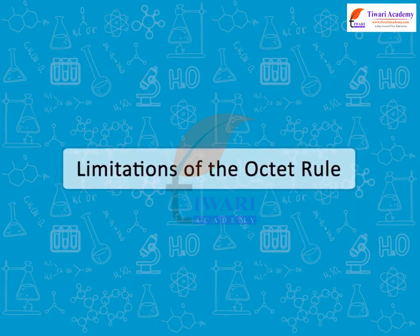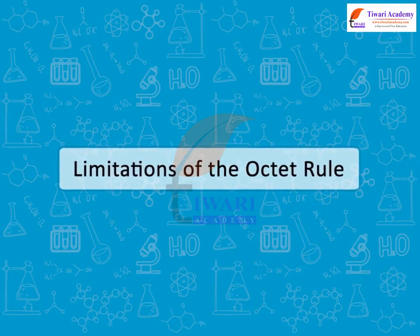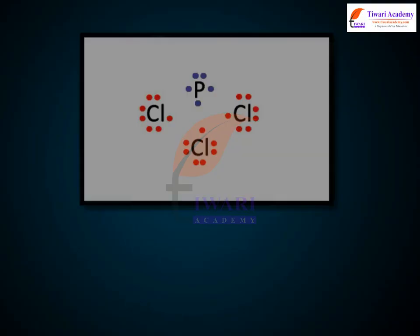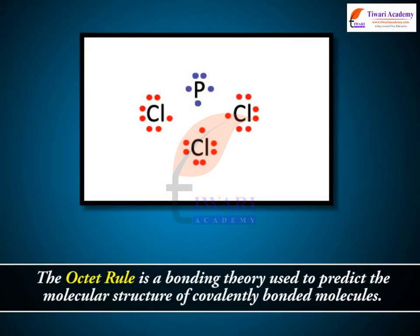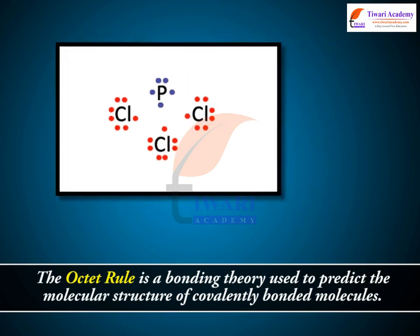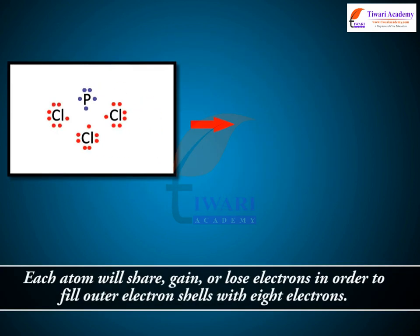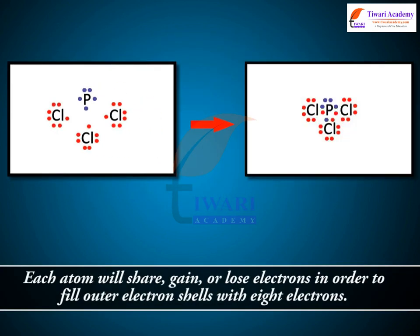The Octet Rule is a bonding theory used to predict the molecular structure of covalently bonded molecules. Each atom will share, gain, or lose electrons in order to fill outer electron shells with 8 electrons.